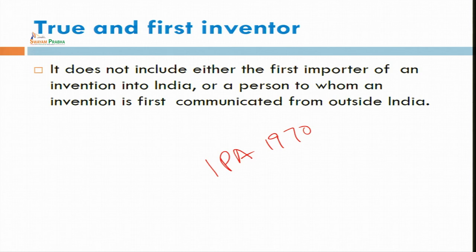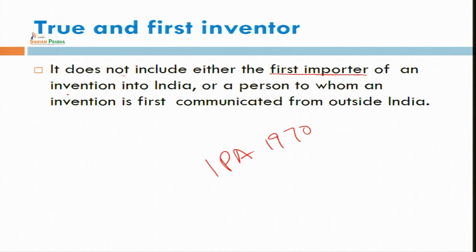Why is this definition given? Because many times, if you are a true inventor but some other person has filed the application for registration under Form 1, we need to determine who is the first and true inventor. Under this definition, it specifically says it does not include the first importer of an invention into India. If an invention is already done or a patent is granted in another country, the person who imports that invention into India is not entitled as true and first inventor. Also, the person to whom an invention is first communicated from outside India does not come under the true and first inventor.